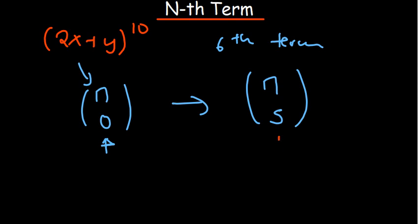Each time they ask you to find the nth term, r is going to be less by 1. So if they ask you to find the 100th term, know that the value of r on the bottom is going to be 99.